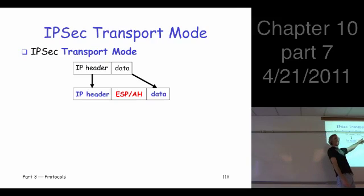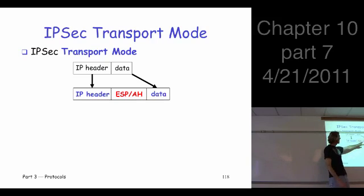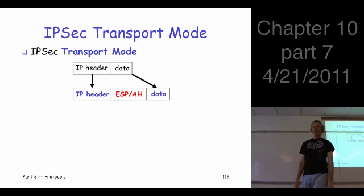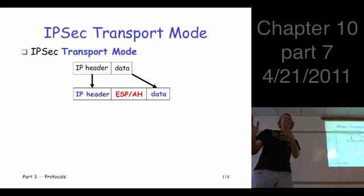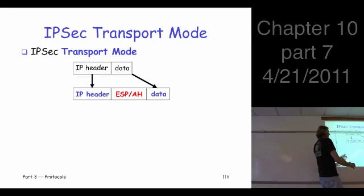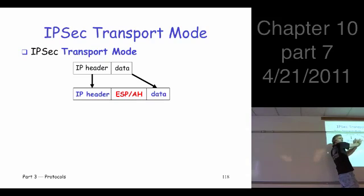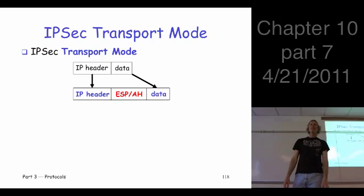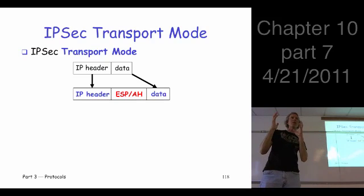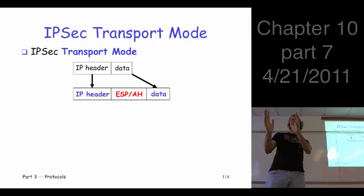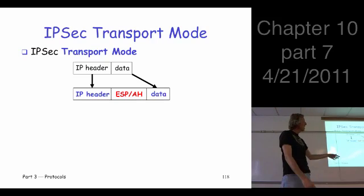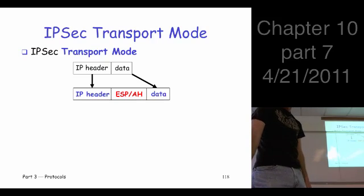That ESP header is the crucial information IPSec needs. So where do we put this? One option is to split the thing apart and insert that additional header information right there. This is the minimal approach — we're inserting the minimum extra bits of information needed to handle this packet. And this is called transport mode.